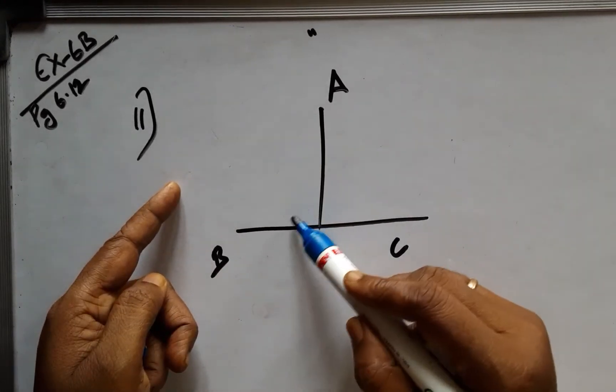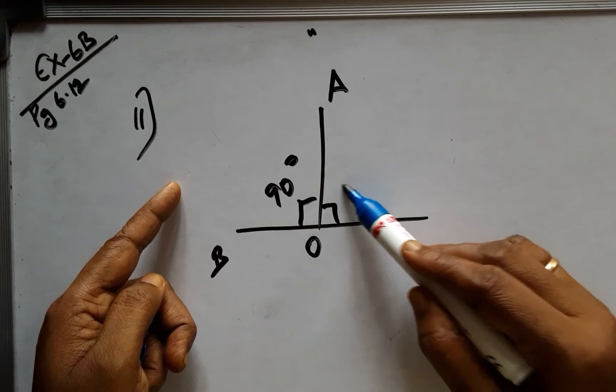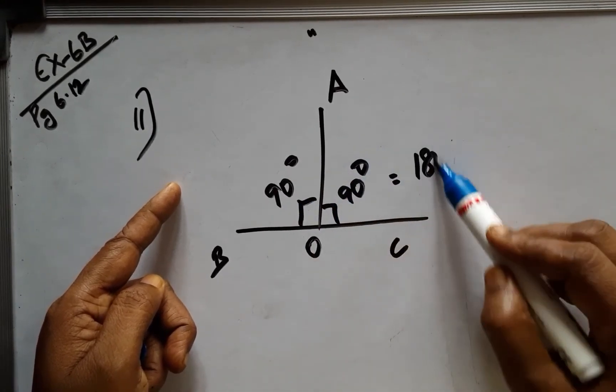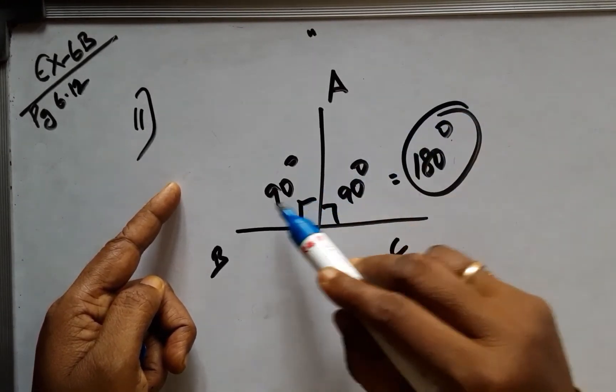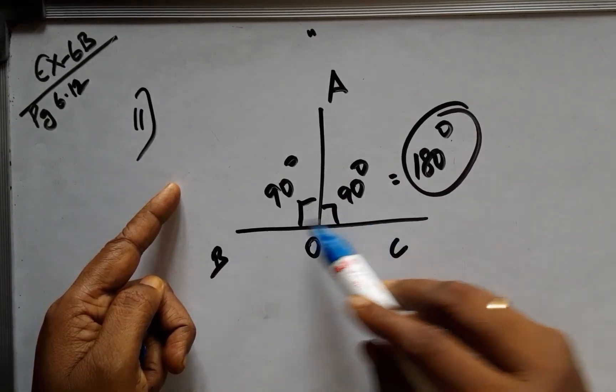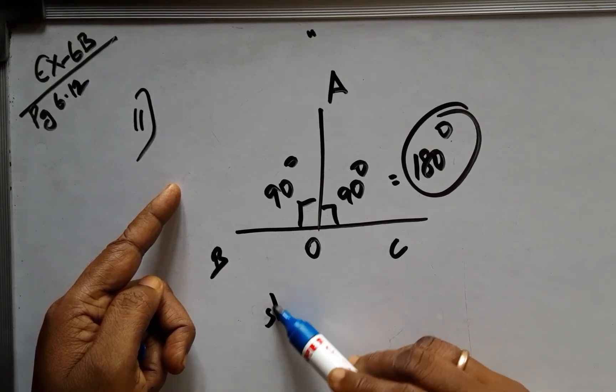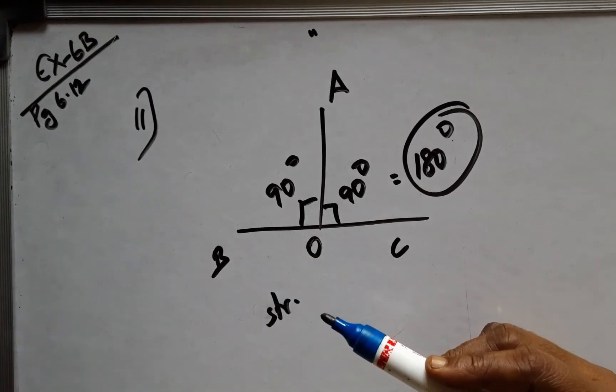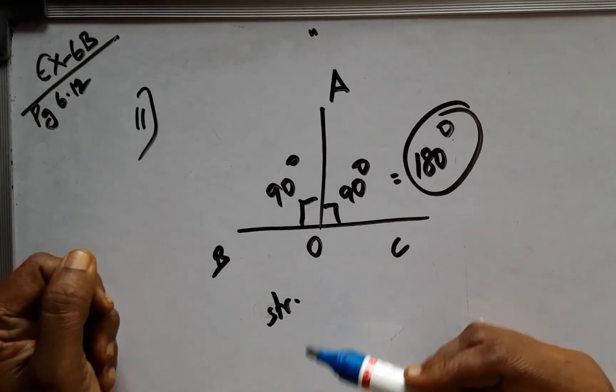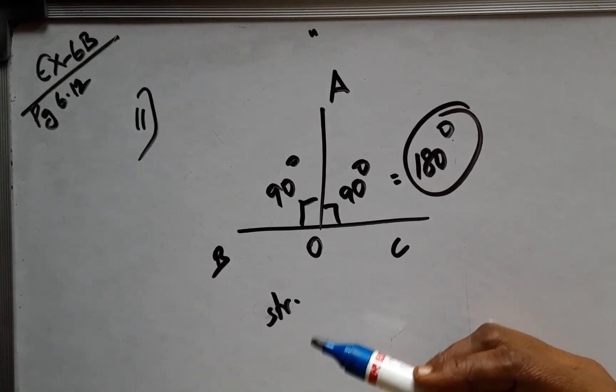11th problem: It has been given that angle AOB is 90° and angle AOC is 90°, the sum of which would be 180°. If we have the sum of angles as 180°, then they form a linear pair, which means that BOC is a straight line. Hence proved. Whatever I have said now, you have to write it down in a proper procedure in a systematic way.